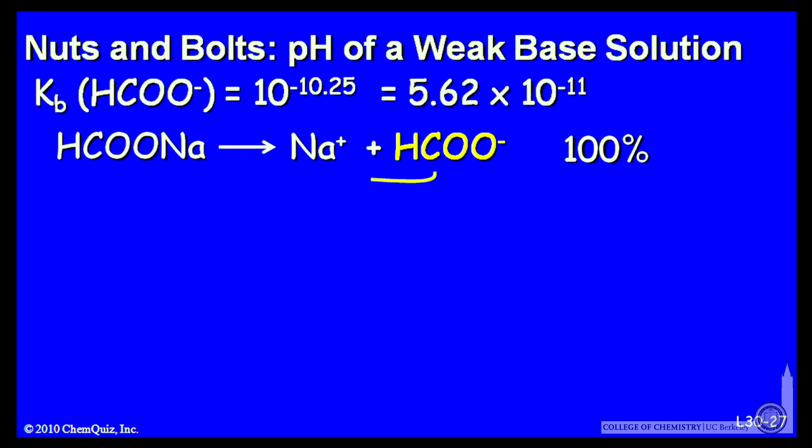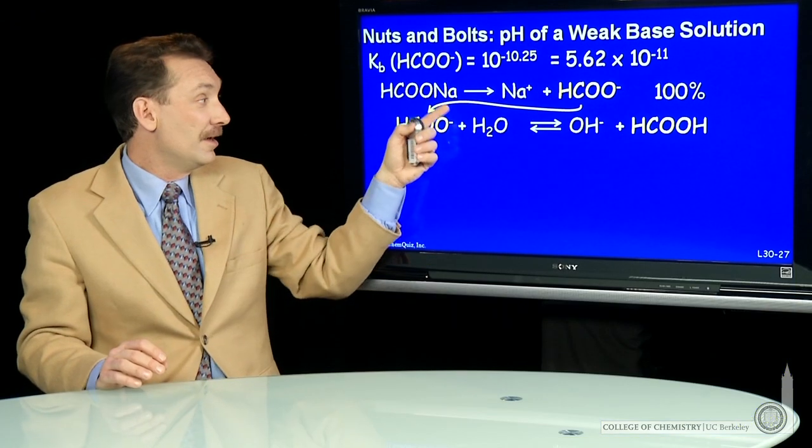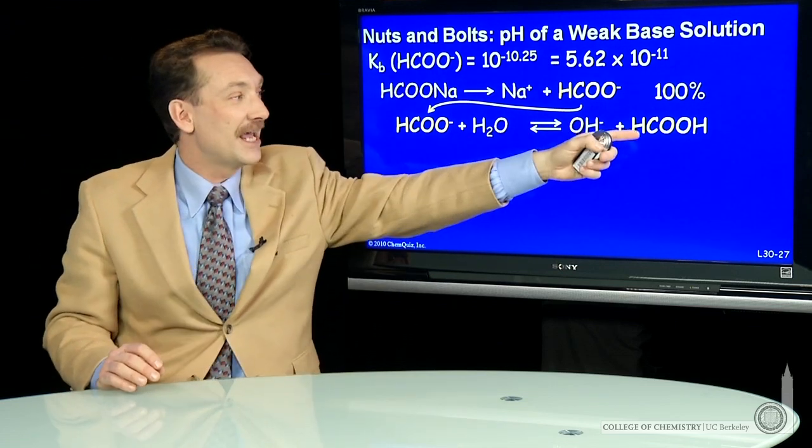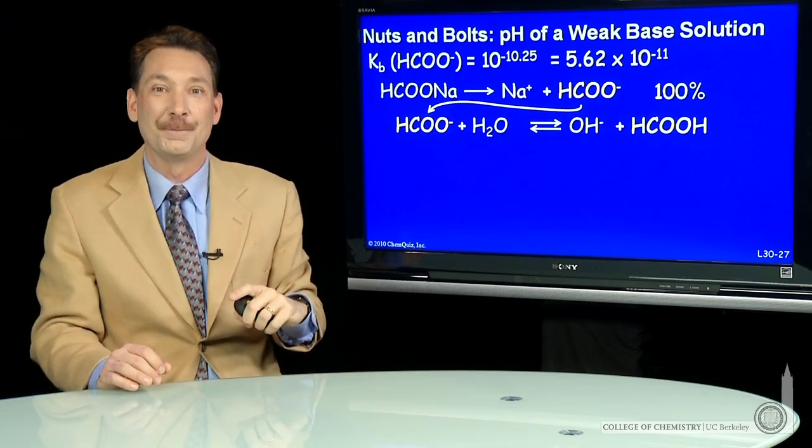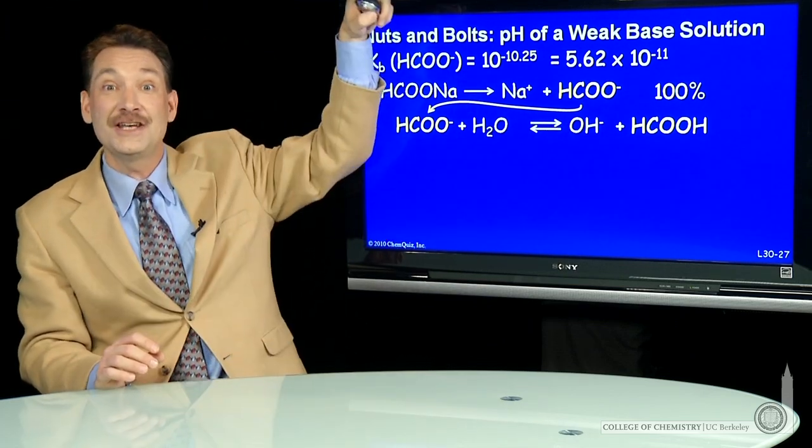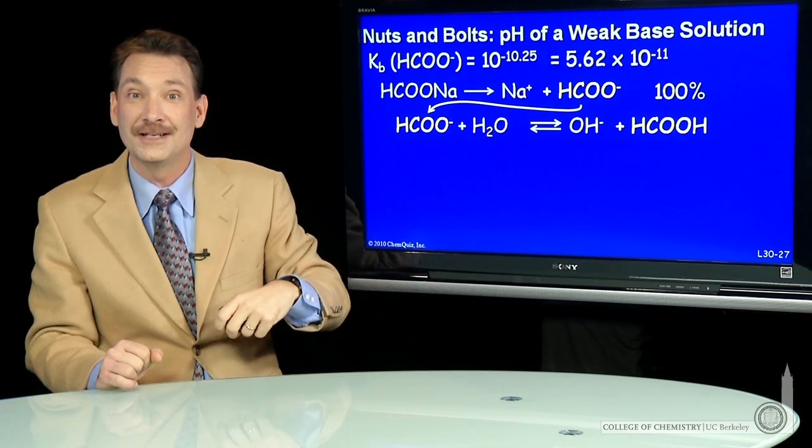And then this ion, the formate ion, reacts with water to form the base. So formate ion plus water forms OH minus the base and, of course, the conjugate acid of the formate ion. So by forming this base, that's what raises the pH above 7 when you put sodium formate, a salt, in water.